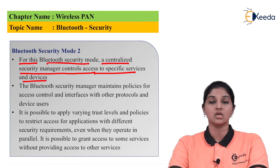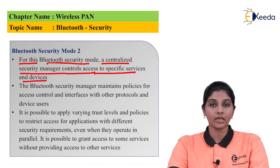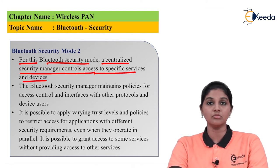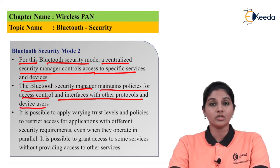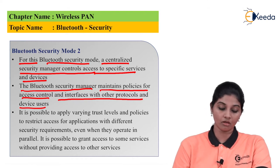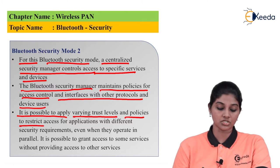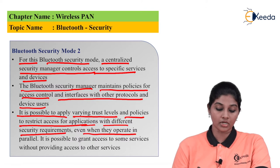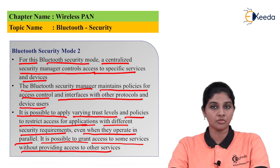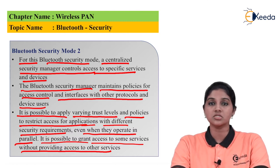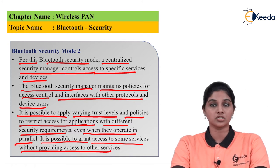Mode 2 uses a centralized security manager that controls access to specific services and devices. A centralized architecture is used where a central control entity manages various devices and their access in the Bluetooth network. The Bluetooth security manager maintains policies for access control and interfaces with other protocols and device users. It is possible to apply variable trust levels and policies, and to grant access to some services without providing access to others.